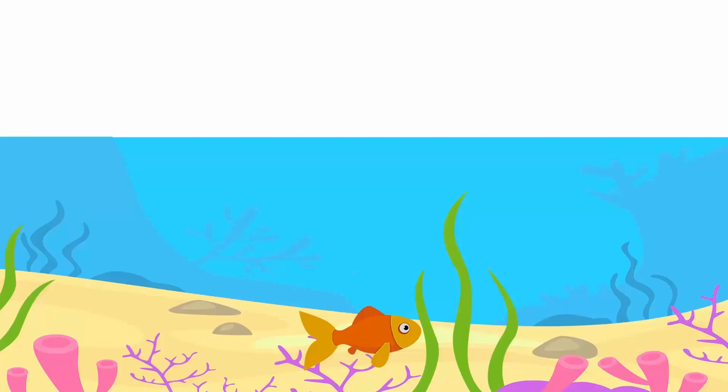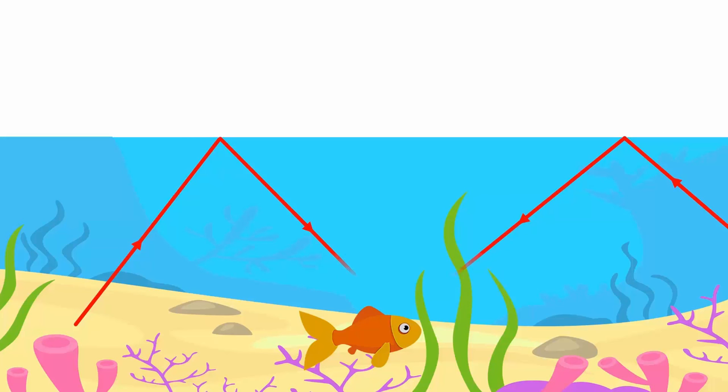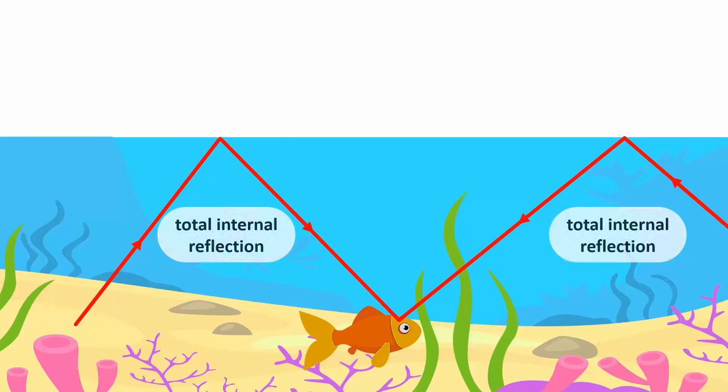If you were a fish in a pond, when you looked up, you would see the reflected views of the sides and the bottom of the pond. Light refracts towards the normal when light enters water from air.